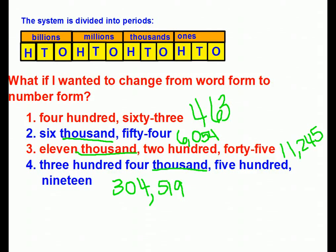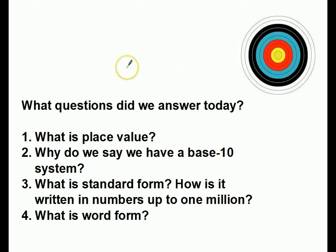So, what have we learned today? You should now be able to answer: What is place value? Why do we say we have a base 10 system? What is standard form, and how is it written in numbers up to one million? And what is word form? If you have questions about any of these, jot them into your notebook right now so we can discuss them tomorrow. Enjoy the rest of your afternoon.